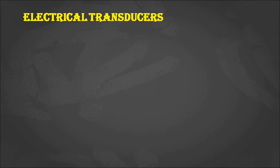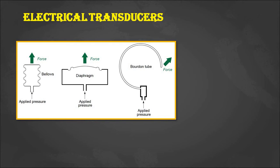Coming to mechanical transducers, here are some examples. The first one is bellows — if you apply pressure it will be converted into a force, and depending upon the intensity of pressure the output force will vary. Similarly, in a diaphragm, depending upon the pressure the output force varies. And in a Bourdon tube, the pressure is converted into force. Likewise, mechanical transducers convert a physical quantity into another physical or mechanical quantity.